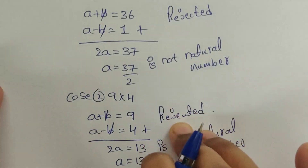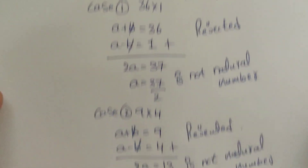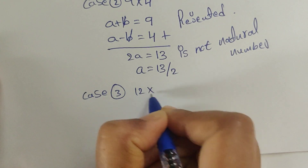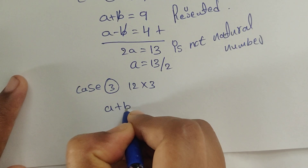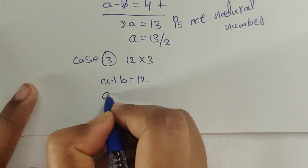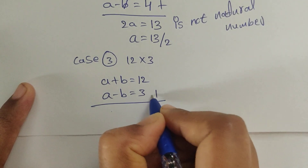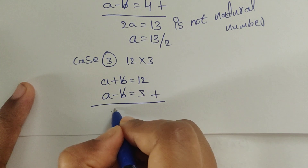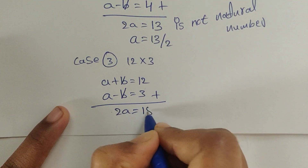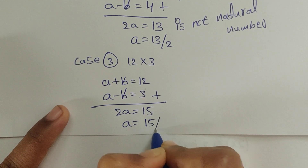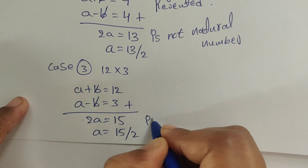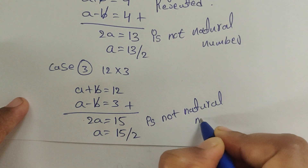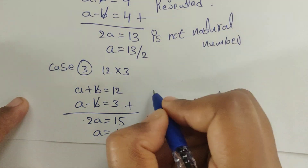Case 3: 12×3, so a plus b equals 12 and a minus b equals 3. Adding these two equations, the b terms cancel, giving 2a equals 15, so a equals 15 divided by 2. This is not a natural number, so Case 3 is also rejected.